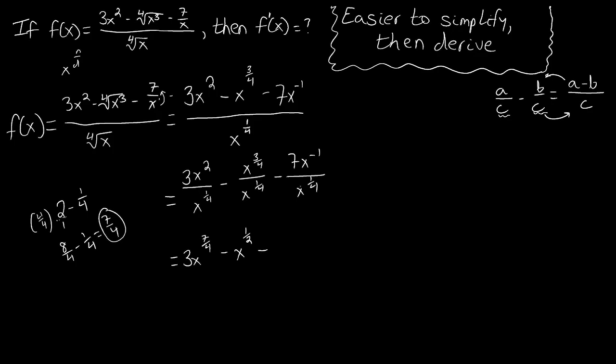What we have for our last term is 7x to the negative 1 over x to the one-fourth. So we have negative 1 minus a fourth. Since this is over 1, our LCD is going to be 4. So we get negative 4 over 4 minus 1 over 4, which becomes negative 5 fourths. Here we get 7x to the negative 5 fourths.